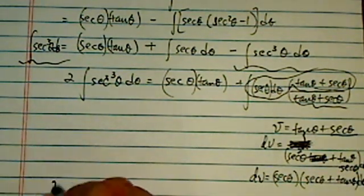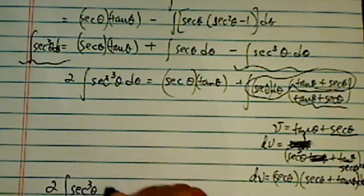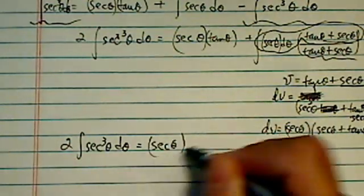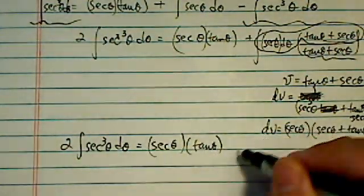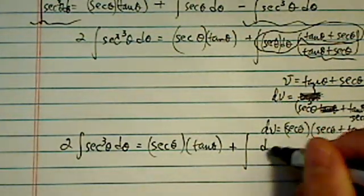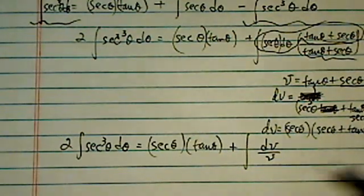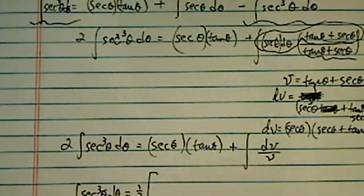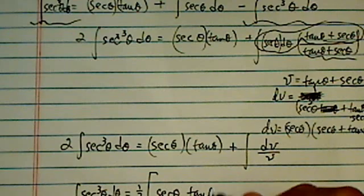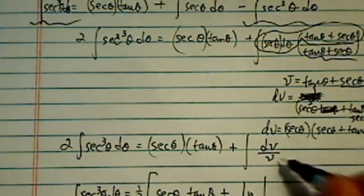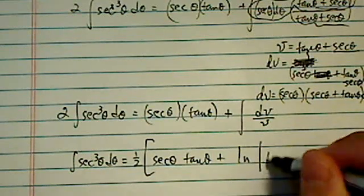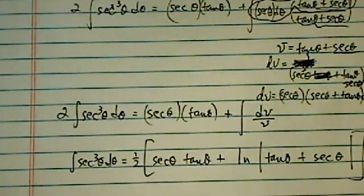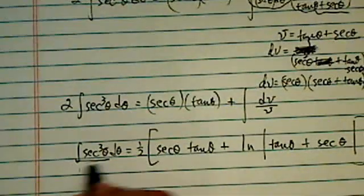So I have two secant cubed theta d theta is equal to a nice one here. I have secant theta tangent theta plus natural log of whatever v was. V was tangent theta plus secant theta. That's mouthful over here. So now having found the secant cubed, we can go back to our first page and substitute it in there.